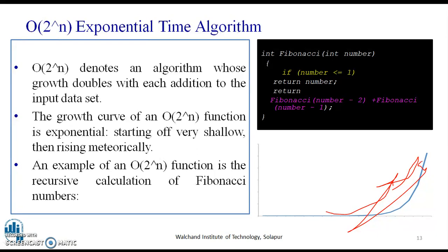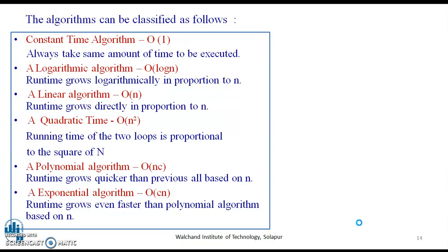It starts off looking like it is flat, but quickly shoots up near to vertical. If you can see, it looks flat and then shoots off vertical. Note, it cannot be actually vertical. An example of O(2^n), that is exponential time algorithm, is the recursive calculation of Fibonacci numbers.